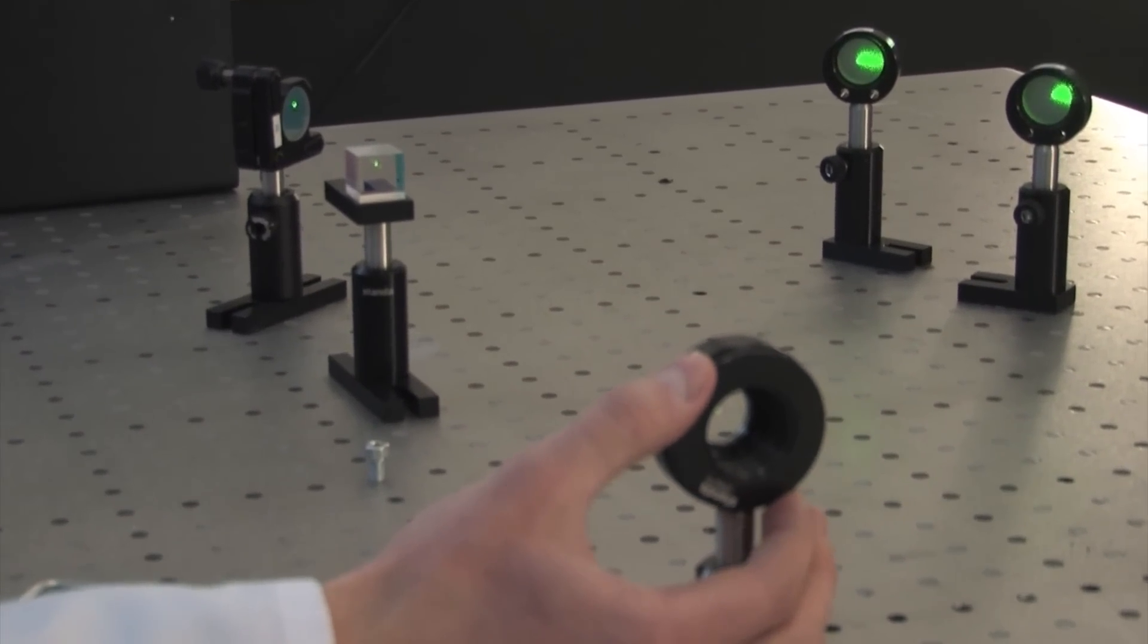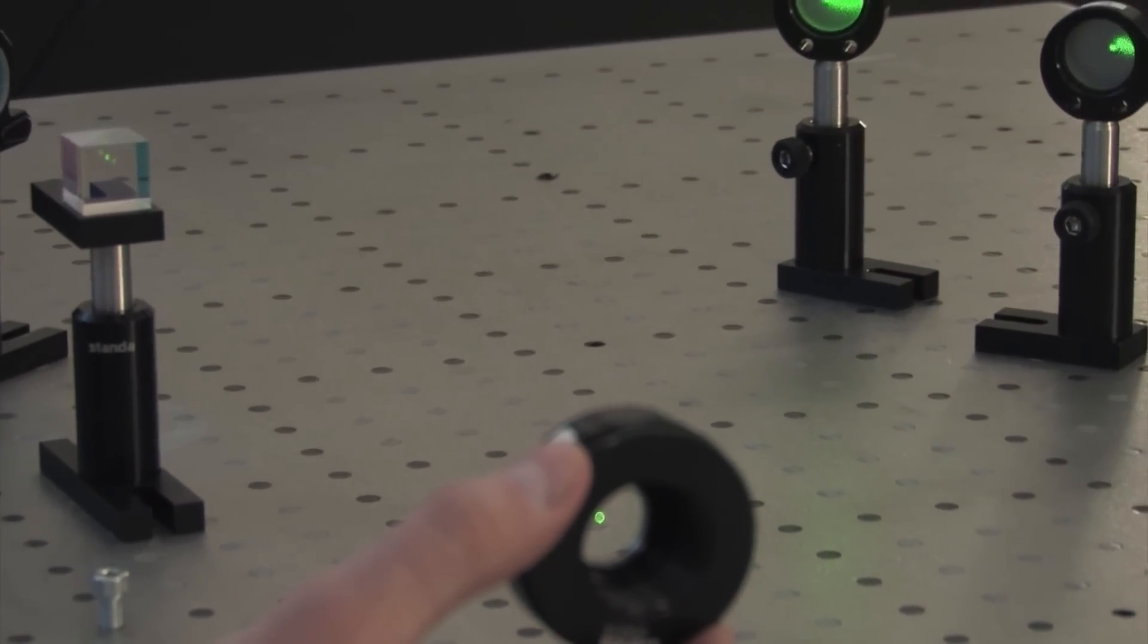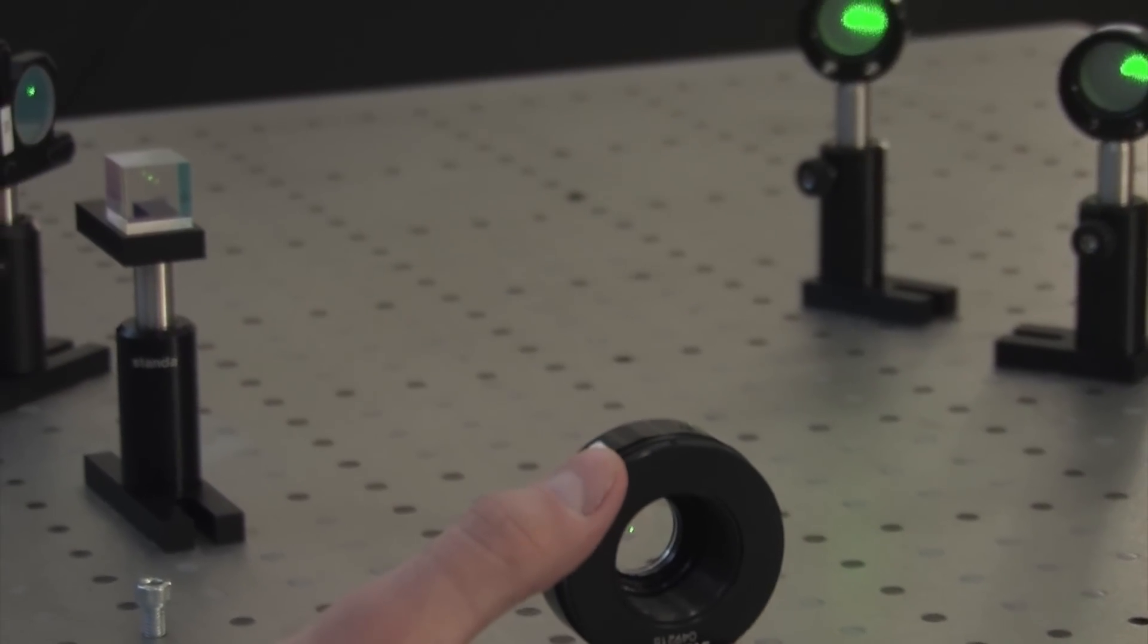Parts are optically contacted. This is achieved by polishing prisms' hypotenuses to a very high flatness and then joining them together.